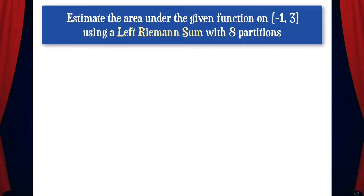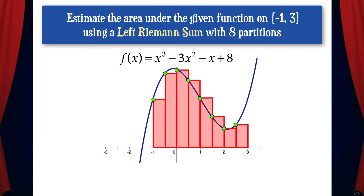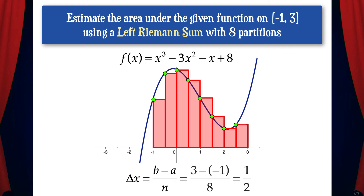Now let's do an example problem that involves Riemann sums. Estimate the area under the given function on the interval negative 1 to 3 using a left Riemann sum with 8 partitions. This means we'll use 8 rectangles to approximate the area under the curve. The first thing we need to do is find delta x, using the formula b minus a over n, where a and b are the endpoints of the interval and n is the number of partitions. So delta x is 3 minus negative 1 over 8, which equals 1 half.